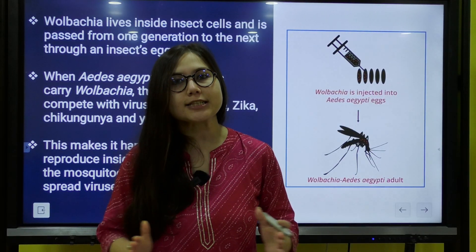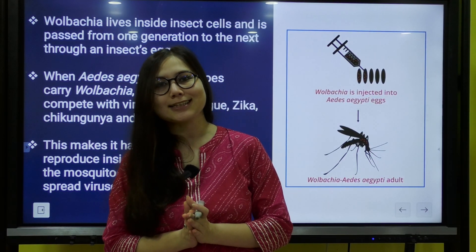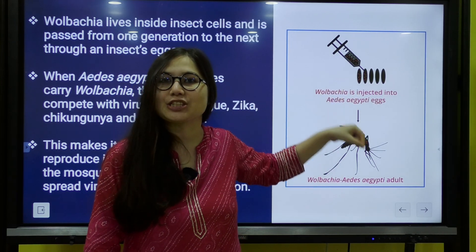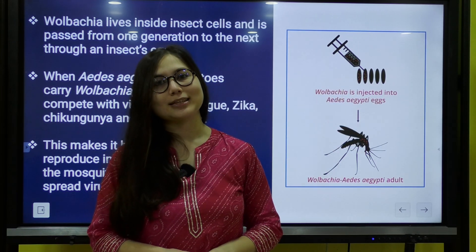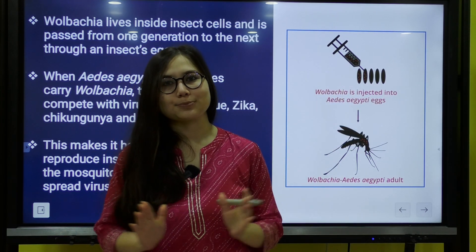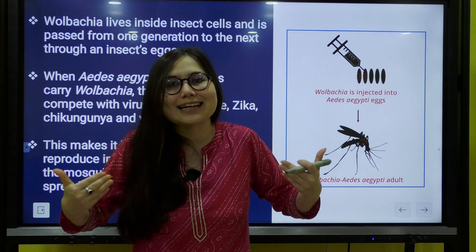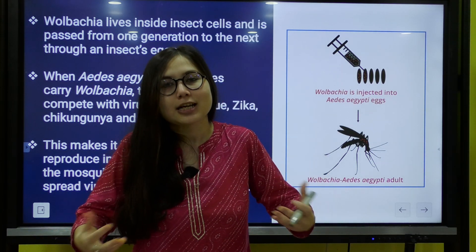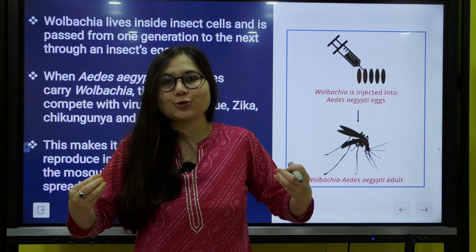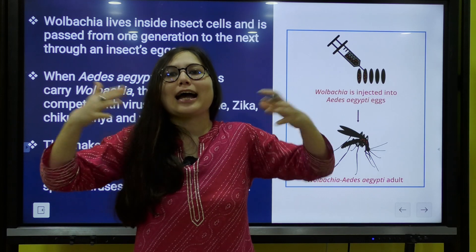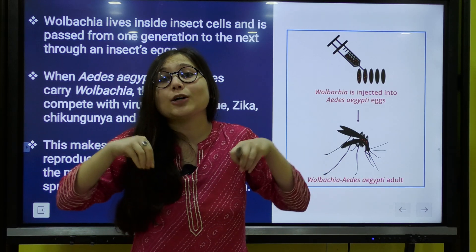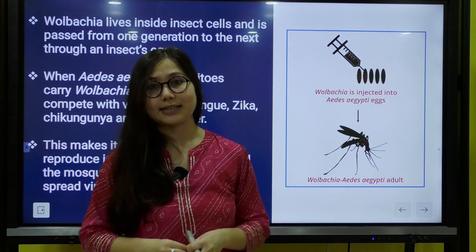The first step is that the Wolbachia bacteria is injected into the eggs of the Aedes aegypti mosquito. Once these eggs hatch, the mosquito turns out to be an adult Aedes aegypti containing the Wolbachia bacteria.